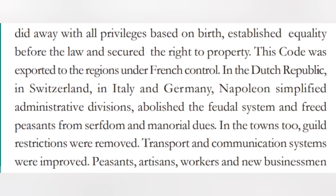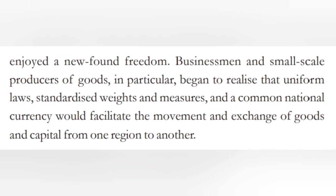The Civil Code of 1804, usually known as the Napoleonic Code, did away with all privileges based on birth, established equality before the law, and secured the right to property. This code was exported to the regions under French control — the Dutch Republic, Switzerland, Italy, and Germany. Napoleon simplified administrative divisions, abolished the feudal system, and freed peasants from serfdom and manorial dues. In the towns too, guild restrictions were removed and transport and communication systems were improved. Businessmen and small-scale producers began to realize that uniform laws, standardized weights and measures, and a common national currency would facilitate the movement and exchange of goods and capital from one region to another.